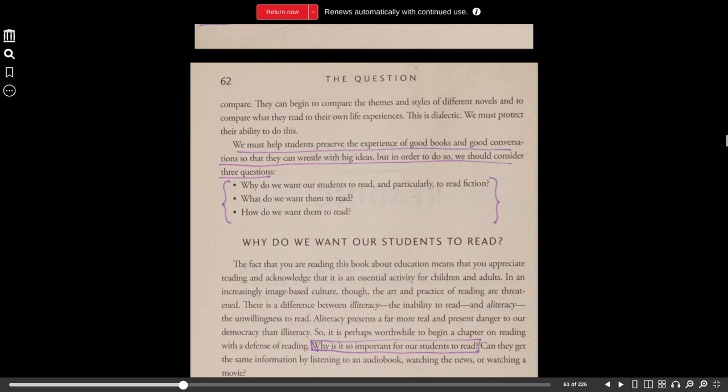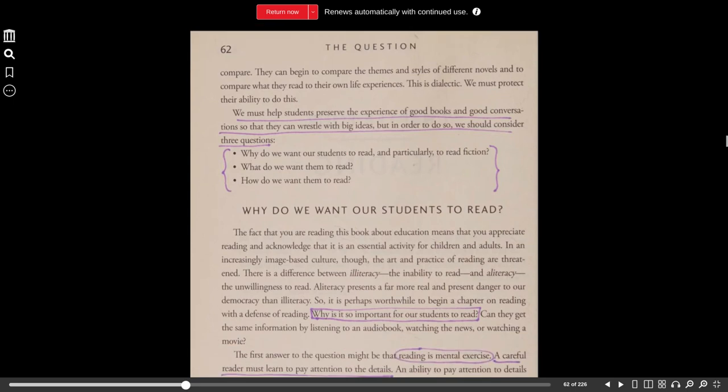They can begin to compare the themes and styles of different novels and to compare what they read to their own life experiences. This is dialectic. We must protect their ability to do this. We must help students preserve the experience of good books and good conversations so that they can wrestle with big ideas. But in order to do so, we should consider three questions.